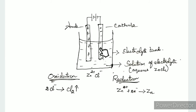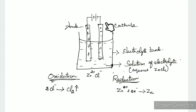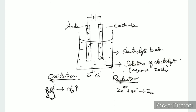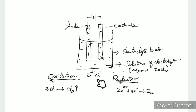In the electrolytic cell example, the solution is aqueous zinc chloride, which contains zinc 2+ and Cl- ions. When current is applied, the positive zinc 2+ ions move to the cathode, and Cl- ions move to the anode. At the cathode: Zn²⁺ + 2e⁻ → Zn (zinc is deposited). Chlorine gas is released at the anode.